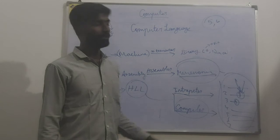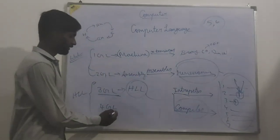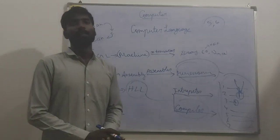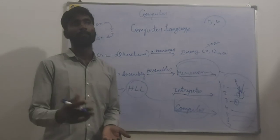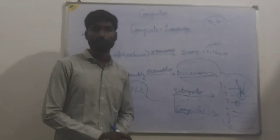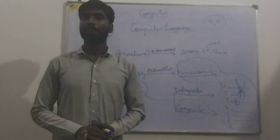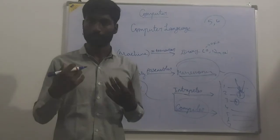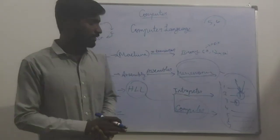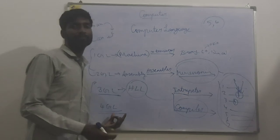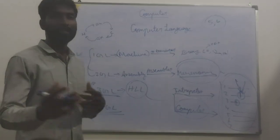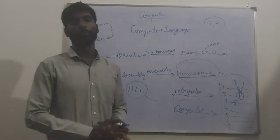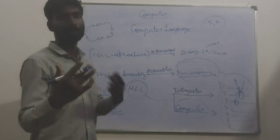And fourth generation is like how humans talk. For example, if you go to some metro station and there is a robot, if you say 'make coffee,' it will make coffee. So fourth generation is very easy — like a simple human conversation. And fifth generation is artificial intelligence, used in robots.